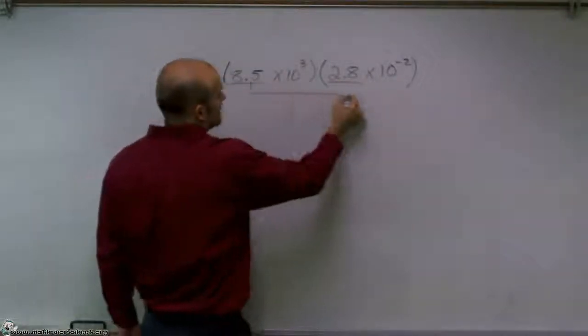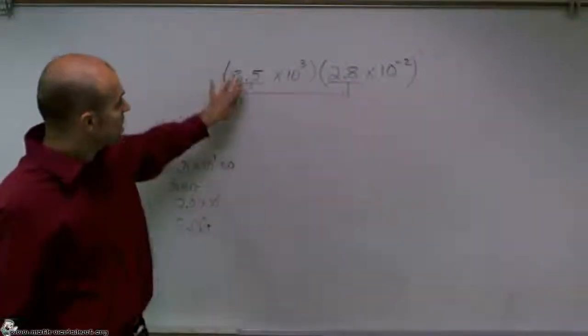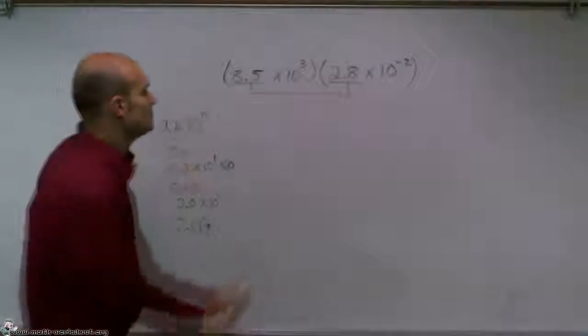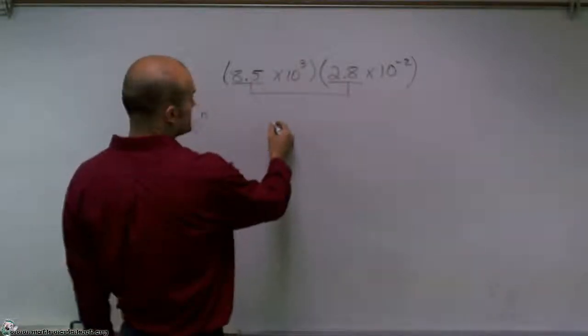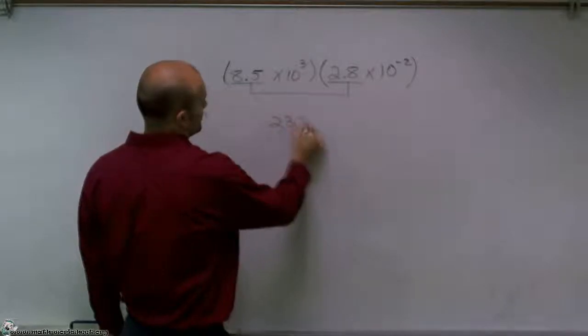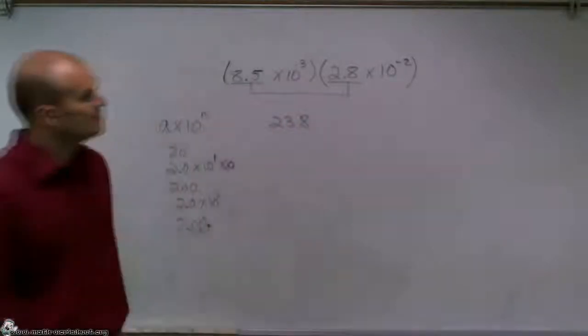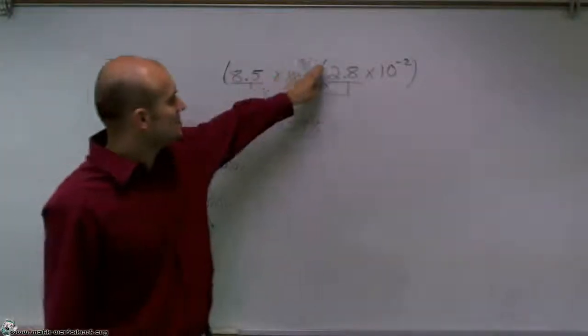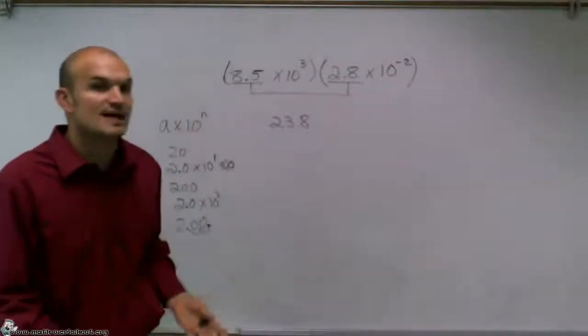we multiply our a's times our a's. Notice these are both 2.5 and 2.8. Those are both between 1 and 10. I'm going to multiply them, and I will get 23.8.